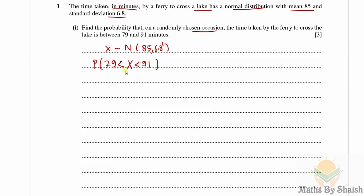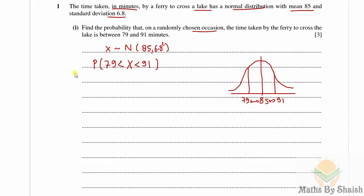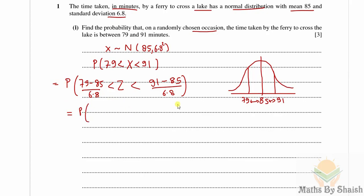We need to find P(79 < X < 91). From the normal distribution graph, the mean is 85, with 79 to the left and 91 to the right. The distance is 6 on each side, so we get the same Z value with different signs. Standardizing: Z = (79 − 85)/6.8 and Z = (91 − 85)/6.8.